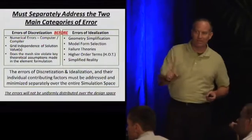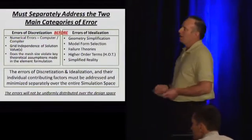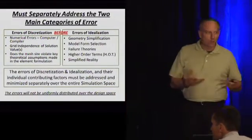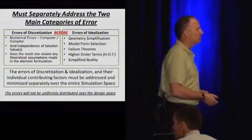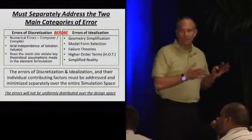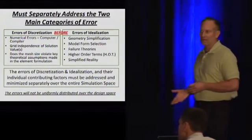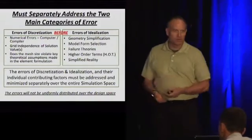The two types of errors are the errors of discretization, your mesh, and the errors of idealization, the numerical formulation of the elements, and you find an element code, for example. You need to address the errors of discretization before the idealization, or the idealization answers that you get are garbage.